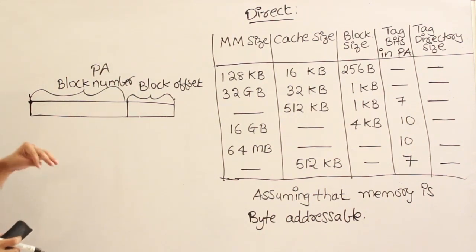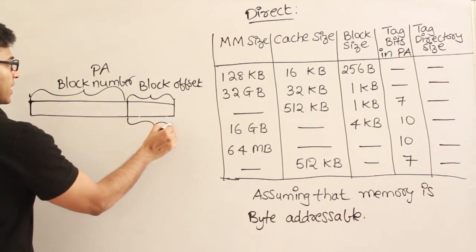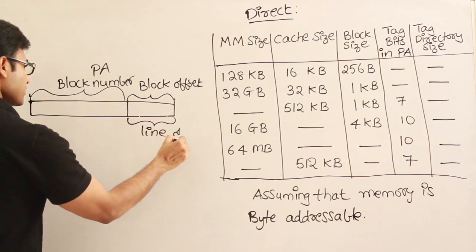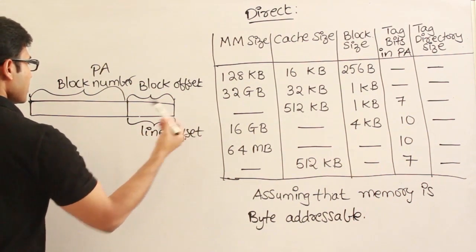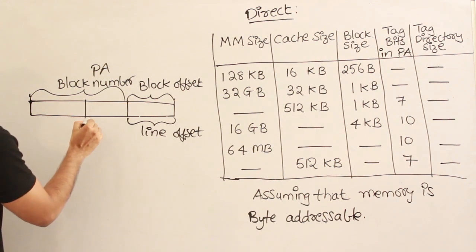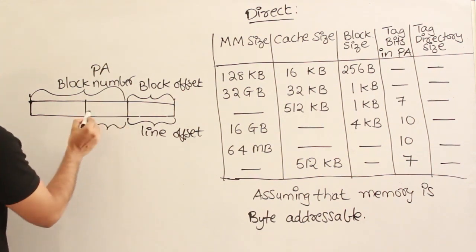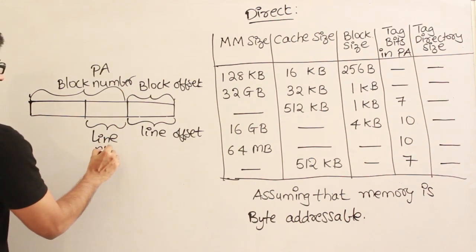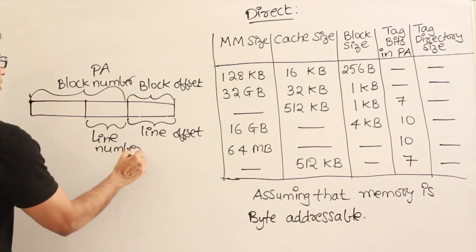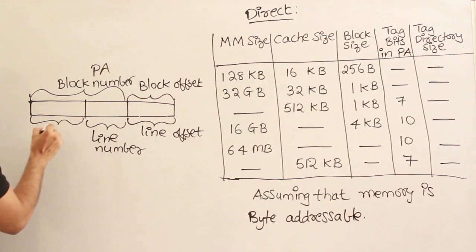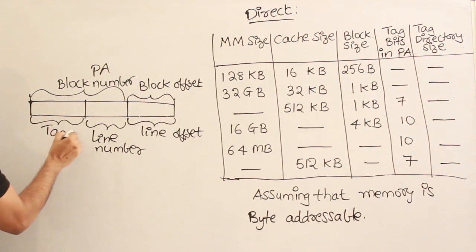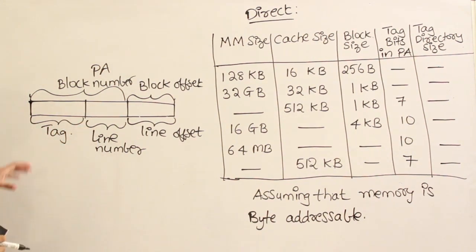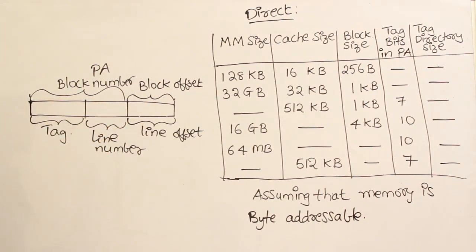According to the cache, the address is organized differently: there is a line offset — used to find the particular word inside a line — then the line number, and the remaining part is the tag. They are giving various parameters and asking for various results.